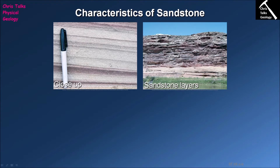In the case of sandstones, as you can see from this picture, the clasts are visible to the naked eye and they range in size typically from about two millimetres to around 1/16th of a millimetre — pretty small, but you can just about see them with the naked eye or with a hand lens. Sandstones tend to form bedded sequences, and the beds can vary in thickness from centimetres all the way up to tens of metres, which is a reflection of the type of environment in which the sand is being deposited.